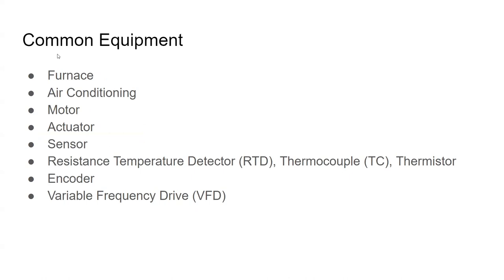Some common equipment you could see yourself using in a PID application: a furnace and air conditioning — that is what you would use to complement a PID in a household setting. A motor, like in your car — the speed of the motor, how fast it runs, could be dependent on what you set your cruise control to. An actuator, sensors — so how do we interpret that tank volume? That would be through a sensor. The most commonly known sensors are RTD, which stands for resistance temperature detector, and TC, which stands for thermocouple.